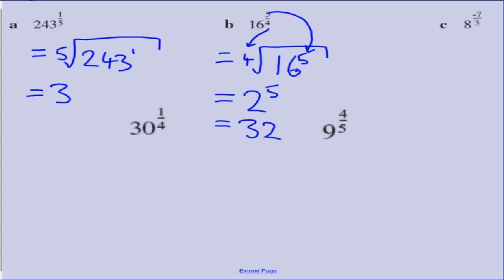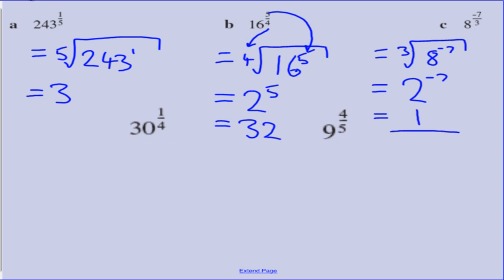Next: 8 to the power of negative 7 over 3. We have a negative power this time, but we apply the rule as normal first. The denominator 3 is the power of the root sign, so it is the cube root of 8 to the power of negative 7. Applying the root first: one number multiplied by itself 3 times gives 8 — that is 2. So we have 2 to the power of negative 7. Since 2 to the power of 7 is 128, the negative power means we flip it: the answer is 1 over 128.